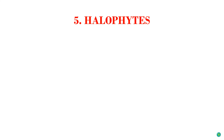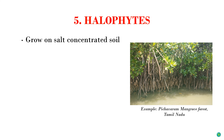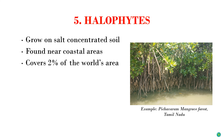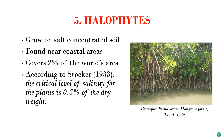The last classification is halophytes. These are special plants which grow on soils with a high concentration of salts. They use filtration processes to utilize salt water and are basically found near seashores, estuaries, and coastal areas. Only two percent of plant species found on earth are halophytes. According to one researcher, the critical level or saturation point of salinity for the plant is 0.5 percent of dry weight.